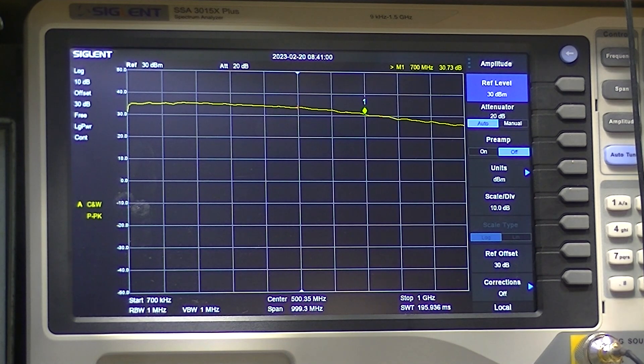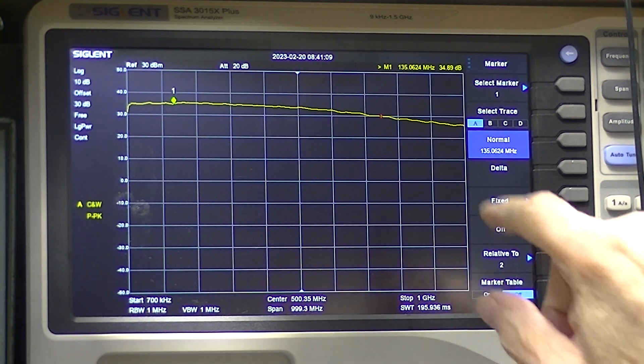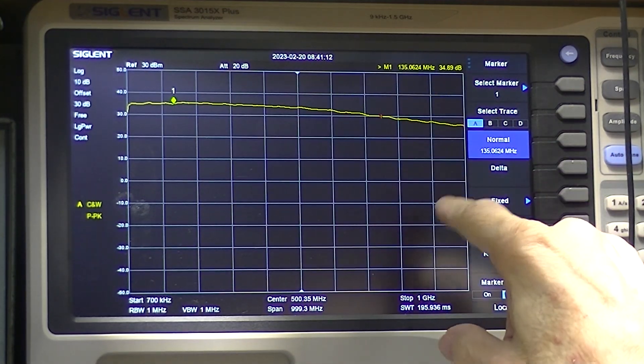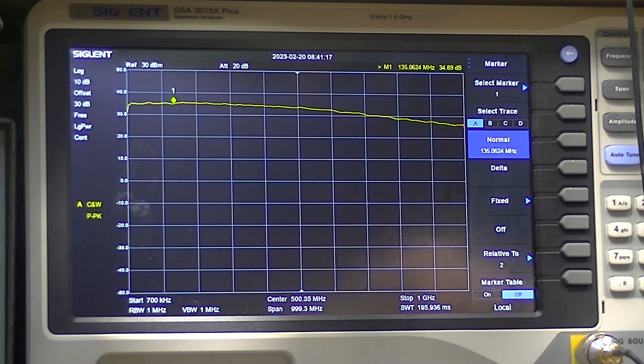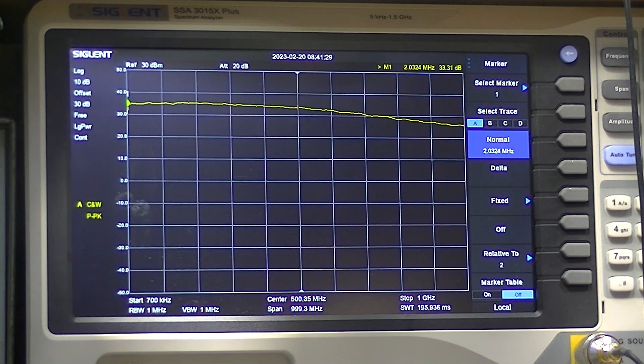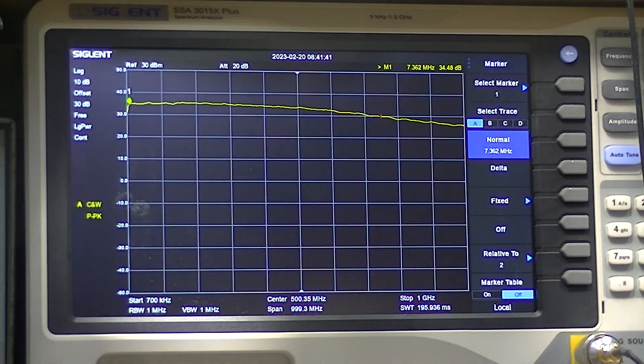And if we go down to the low end, say right about here, 135 megahertz, we have our 35 dB again. And it drops off pretty quickly. Here we're at 7 megahertz and 34.5 decibels output.